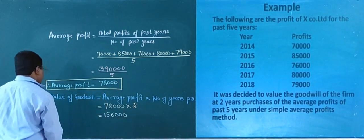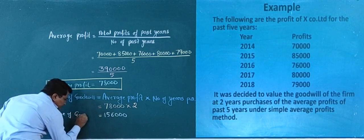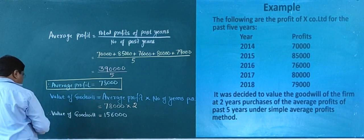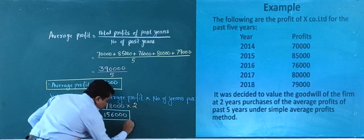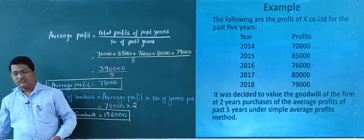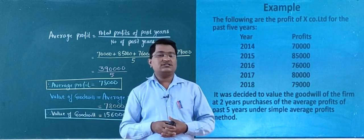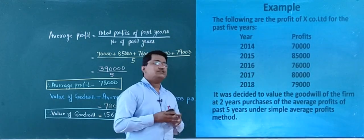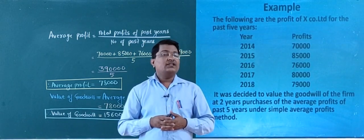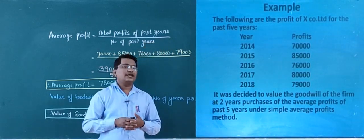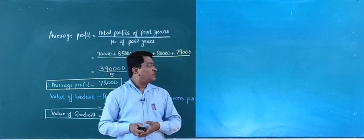Therefore, the value of goodwill is equal to 1,56,000. This is the solution for the given problem. I hope by these three problems — two from previous sessions and this one — you understood how to calculate goodwill under simple average profit method. In the next class, we move with the weighted average profit method. Thank you, everyone.